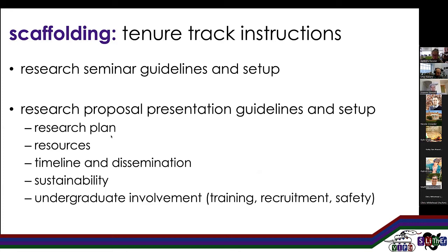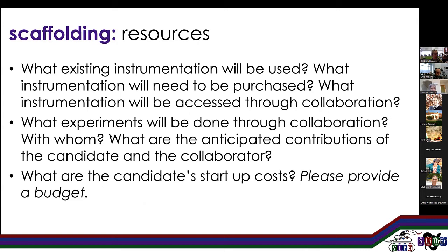We gave them guidelines and the setup. We asked them to talk about the research plan, resources, the timeline for the research program, how they're going to disseminate the work, the sustainability, and the undergraduate involvement. We would provide them with the types of questions we could ask during the proposal process. For example, on resources: what instrumentation will you use? What will you need to purchase? What's going to be done through collaboration? What are the contributions of the candidate and the collaborator? What are your anticipated startup costs? Provide a budget. We provided a list of questions to every single one of our candidates.